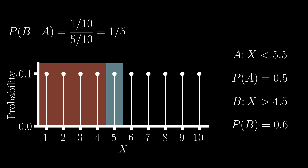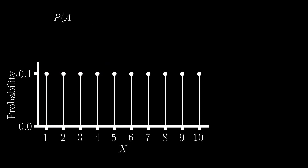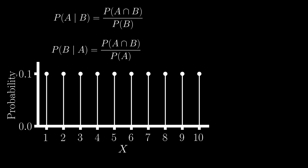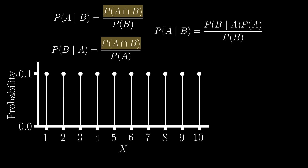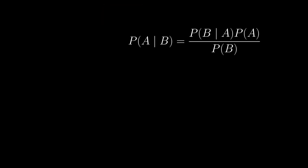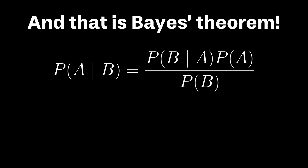Now, if that made sense, we can write out what we just did mathematically. The chance of A given B is equal to the joint occurrence of both events relative to the chance of only B occurring. The same idea also applies to the probability of B given A. What we can see is that we have two equations that both have the joint probability of A and B in the numerator. So, if we simply move our terms around, we arrive at the following equation — and that's it. This is Bayes' theorem. The conditional probability of A given B is equal to the probability of B given A, multiplied by the probability of A, all divided by the probability of B.